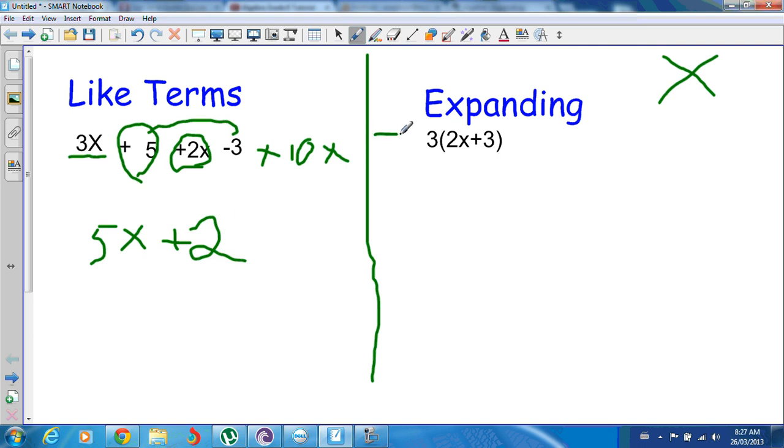So I might have seven x plus three outside of this bracket. You would simply multiply the three times the two x and the three times the positive three. So you're simplifying your brackets.